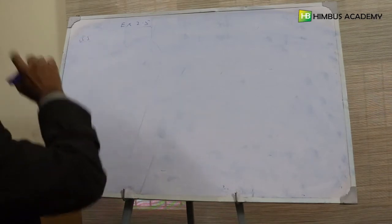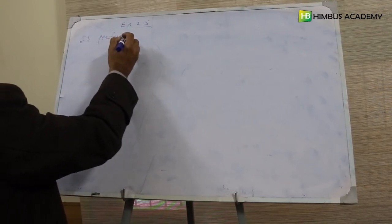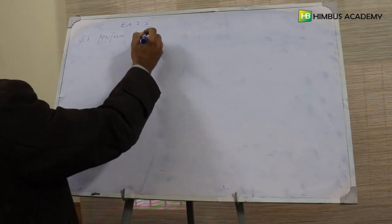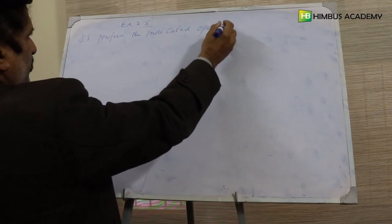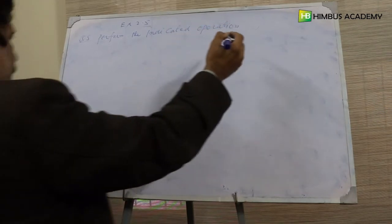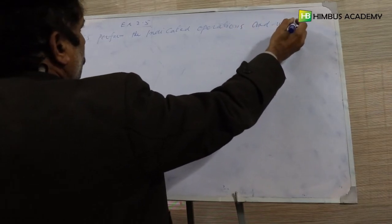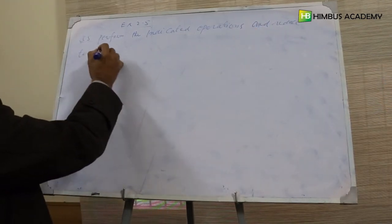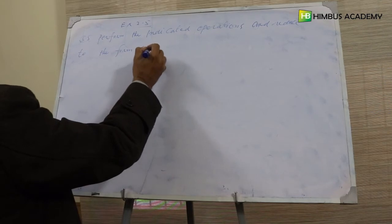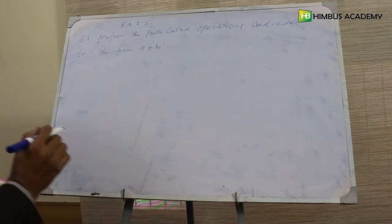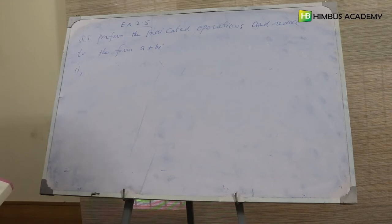Question 5: Perform the indicated operations and reduce to the form of A plus B iota. Perform the indicated operations and reduce to A plus B iota form.